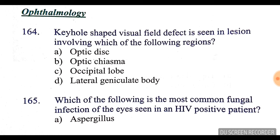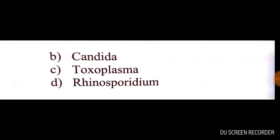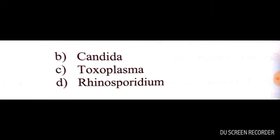Question number 164: keyhole-shaped visual field defect is seen in a lesion involving which of the following regions? The answer is the lateral geniculate body. Question number 165: which of the following is the most common fungal infection of the eye seen in HIV-positive patients? It is Candida — option B is correct.